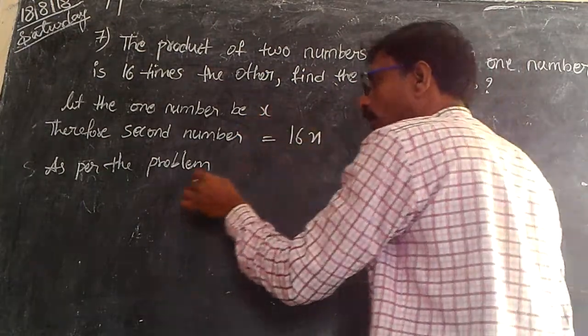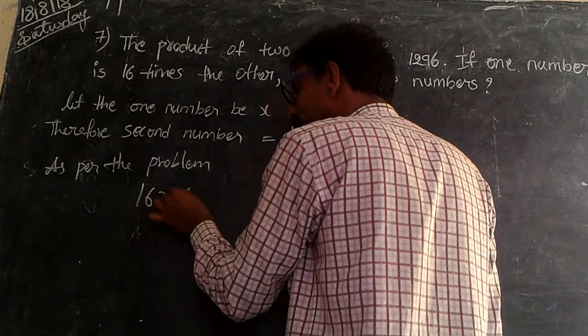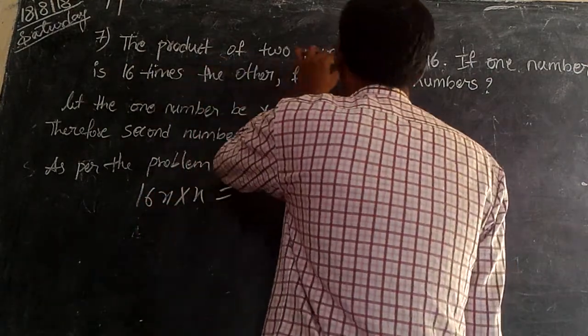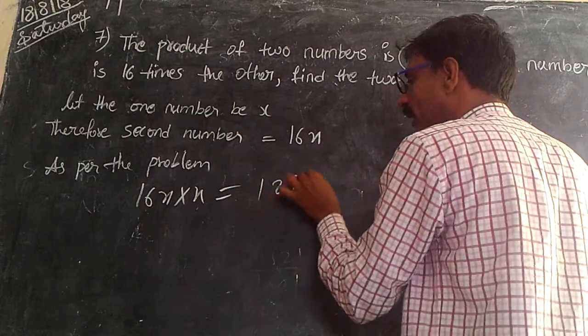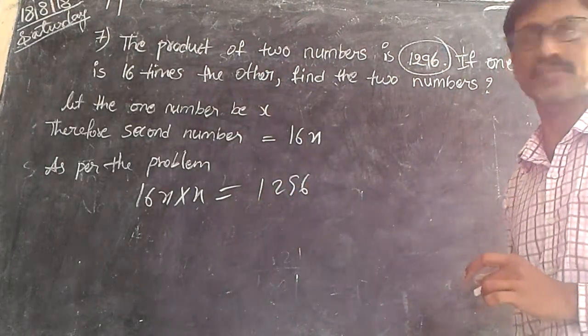As for the problem, their product 16x into x must be equal to how much? 1296. This is given.